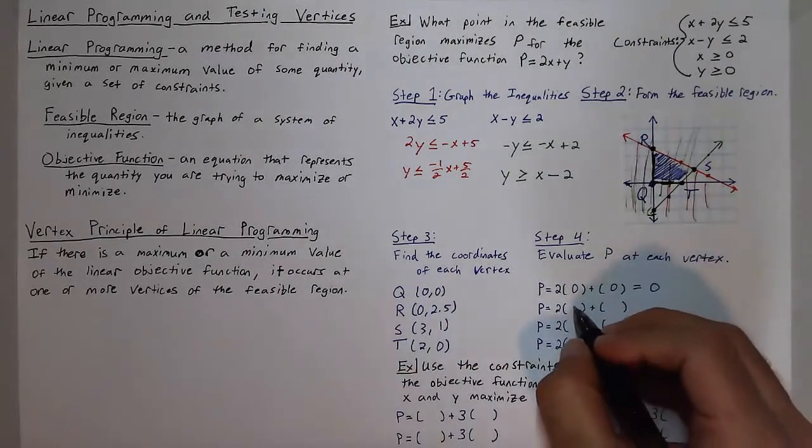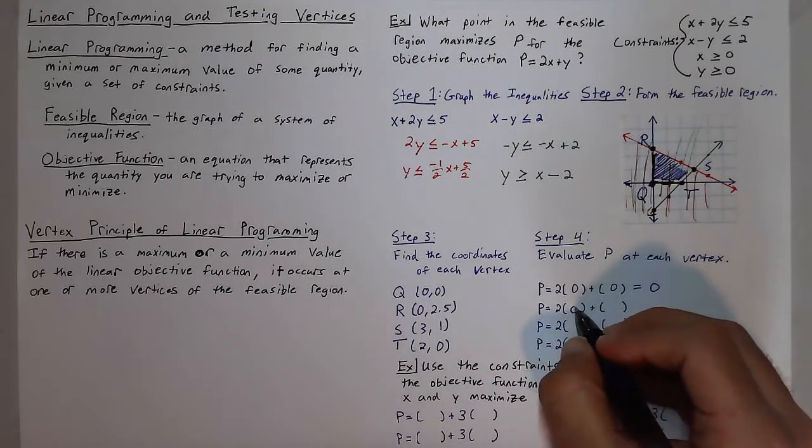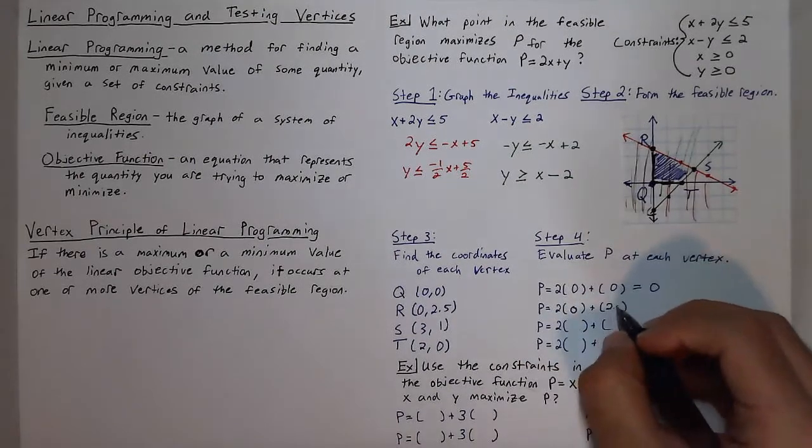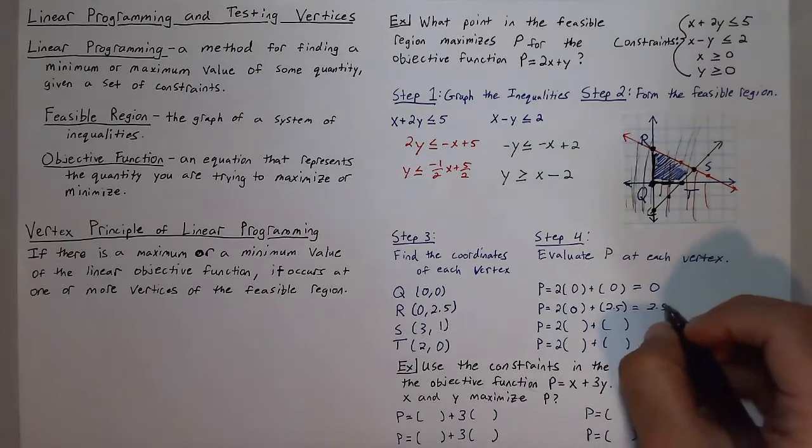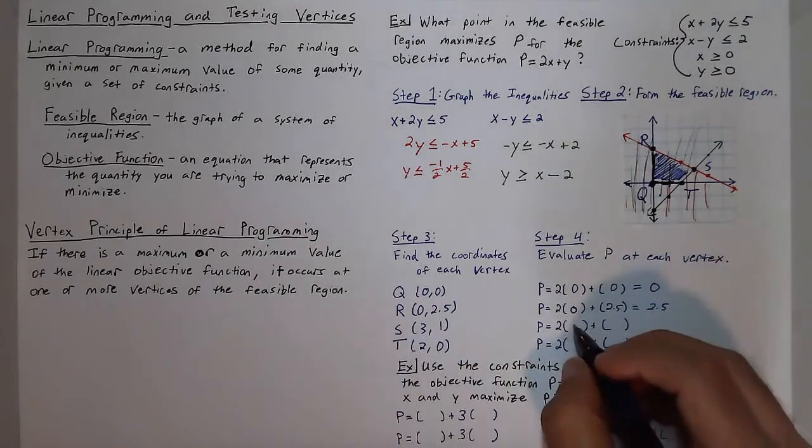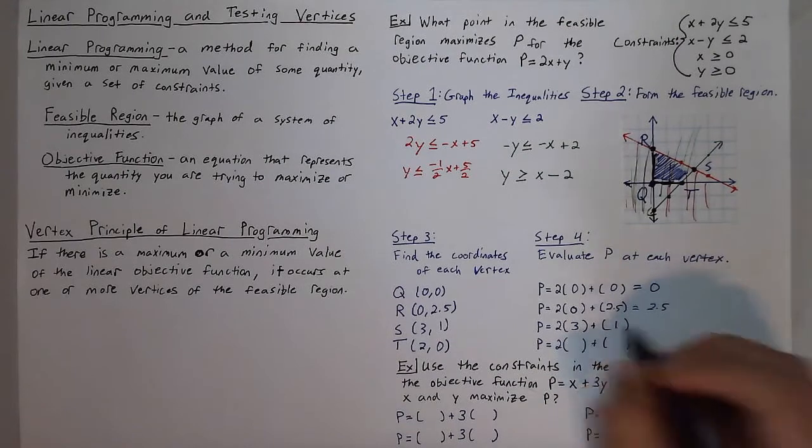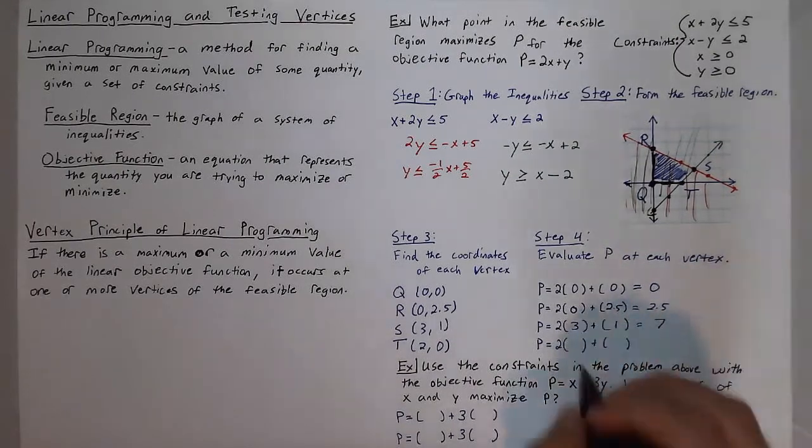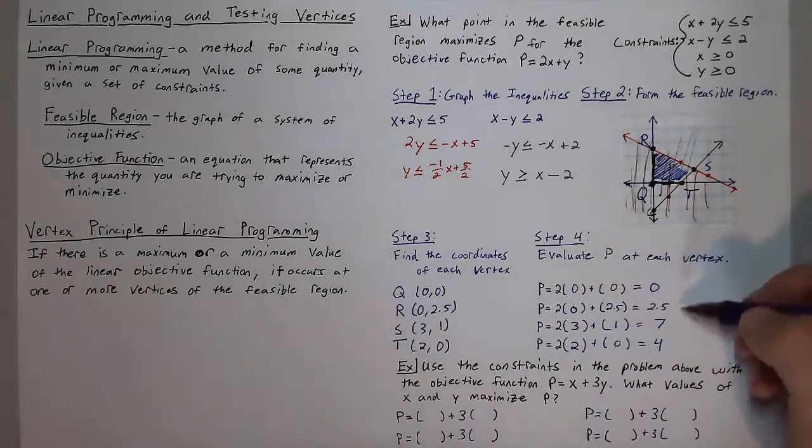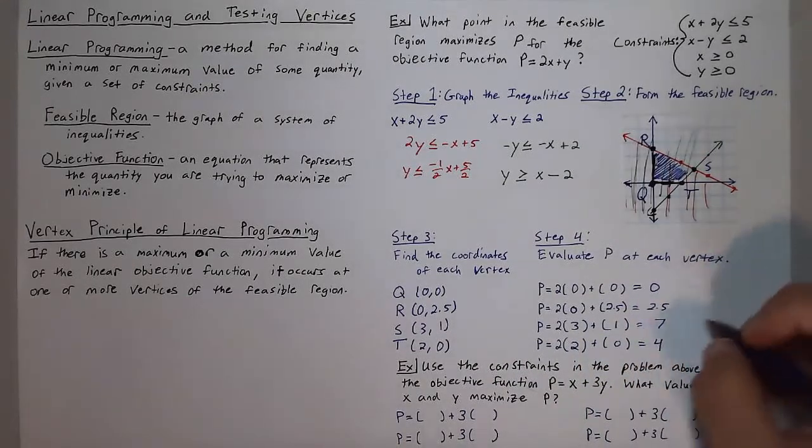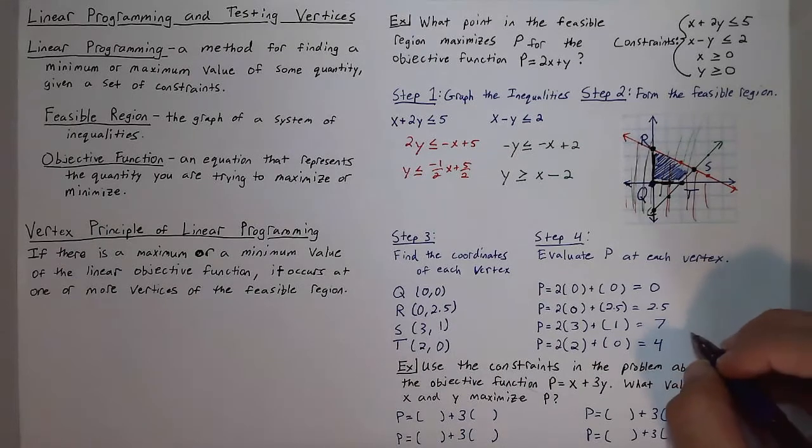Plug it in zero, 2.5, we get two times zero plus 2.5, which is just 2.5. Next we have for s, we have two times three plus one, which gives us seven. And lastly, we have two times two plus zero, which gives us four. Now looking at all these numbers, it's very clear that seven is our biggest number, so that would be our maximum.